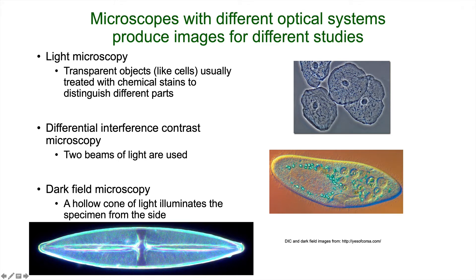A differential interference contrast microscope uses two beams of light that are out of phase with each other, and now look at the incredible detail we're seeing on the inside of a cell — really good detail with cell organelles, and we can see cilia around the perimeter of this paramecium. Dark field microscopy uses a hollow cone of light which illuminates the specimen from the side, so the background is dark and the specimen ends up being lighter. Looking at a diatom this way, we start to see really neat internal structures that normally wouldn't be apparent in a light microscope.